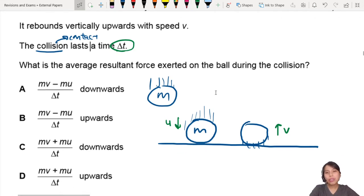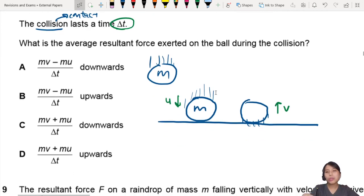What is the average resultant force exerted on the ball during this collision? So you need to think of this force on the ball. Who is pushing the ball? You've got to remember the floor will exert a force on the ball. That's why the ball goes up in the first place.